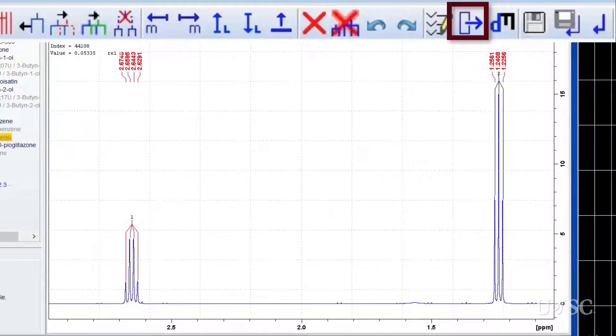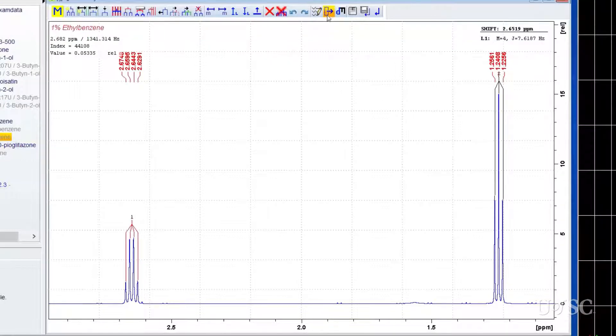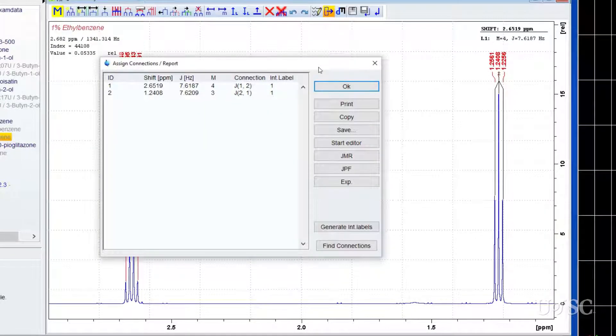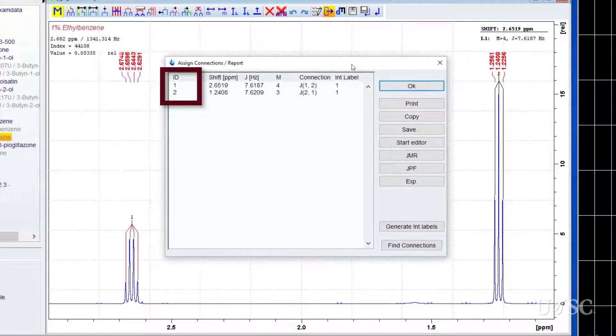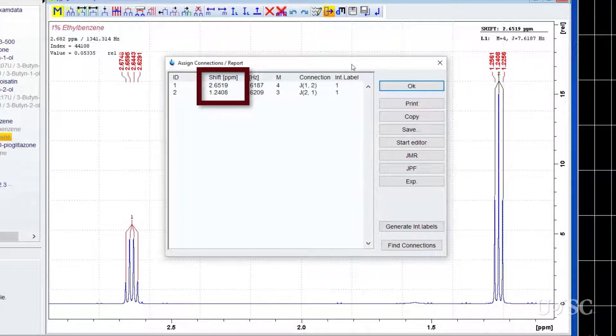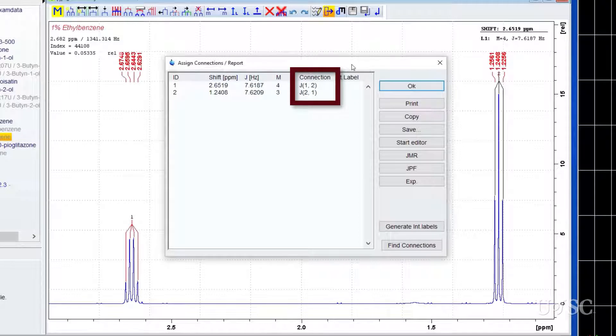A report of the multiplet analysis can be shown by clicking on the icon that looks like an arrow pointing away from a rectangle. This opens a window that includes a table with the multiplets. Starting from the right, the columns have the identifying number of the multiplet, the chemical shift of the multiplet in ppm, the coupling constant, again with four decimal places, the multiplicity marked with a M. The column marked connection includes the IDs of the pair of protons that are coupled.